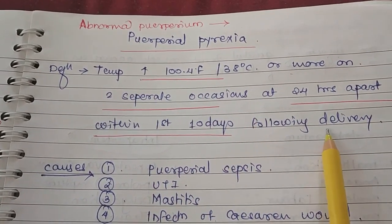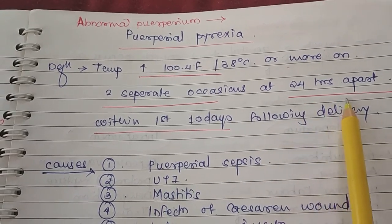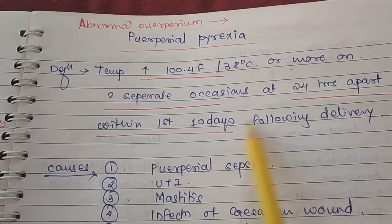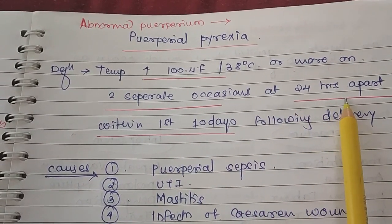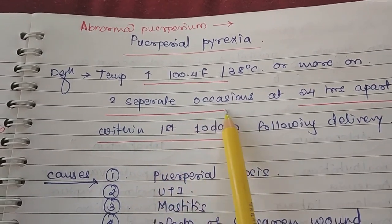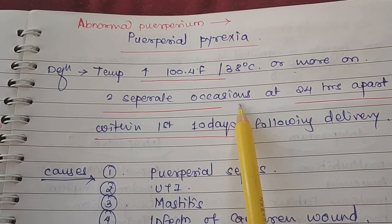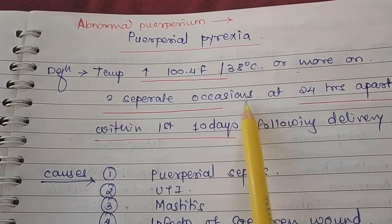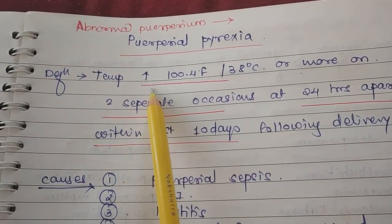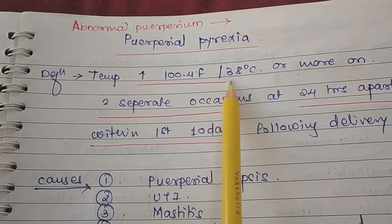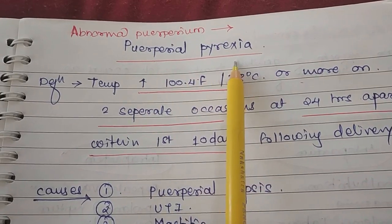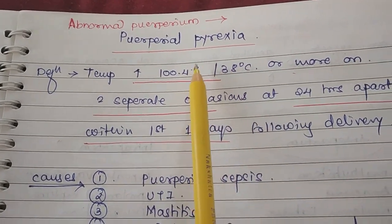Puerperal pyrexia means a temperature increase of 100.4°F or 38°C or more, occurring after 24 hours and within the first 10 days following delivery, on two separate occasions 24 hours apart. Now, what are the causes behind puerperal pyrexia?